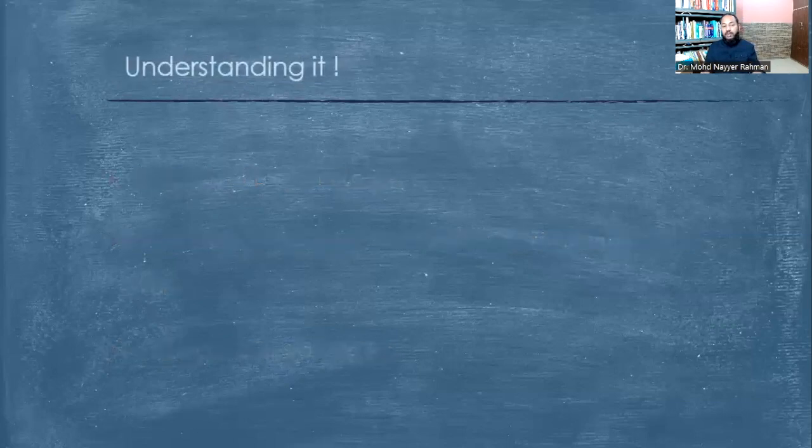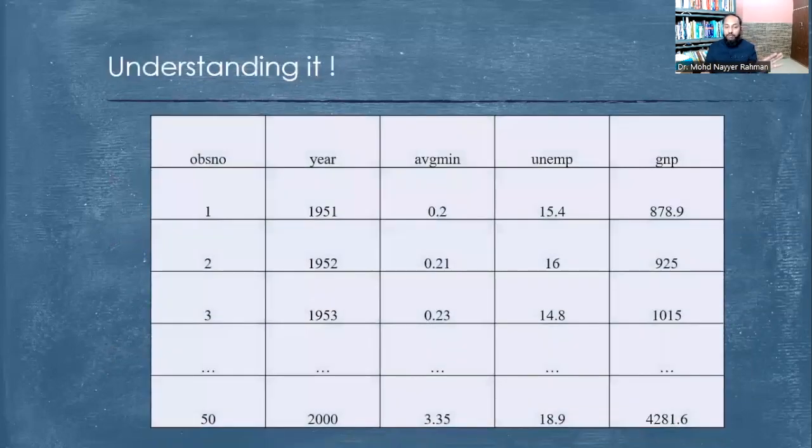The example of time series data is we have observations, we have years. Now a time frame will be there - months can be there, days can be there, years will be there - so some kind of chronology and time frame should be there. Then we will have variables and their data. The time frame is very important in this, but the time frame cannot be restricted to year or days - it can be anything.